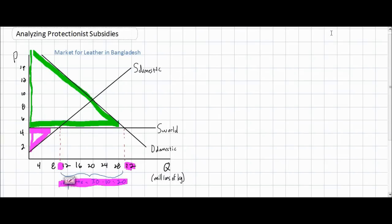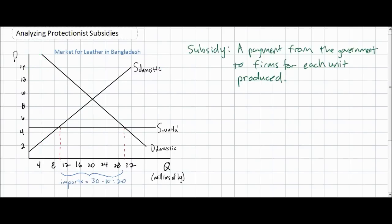Under these circumstances, a government may consider imposing protectionism for the leather industry to try to increase the quantity of leather produced by domestic leather producers. We're going to show the effects of a protectionist subsidy in the market for leather in Bangladesh. A subsidy is simply defined as a payment from the government to firms for each unit produced. In this case, we're going to discuss the effects of a $2 per kilogram subsidy from the Bangladeshi government to the producers of leather in Bangladesh.